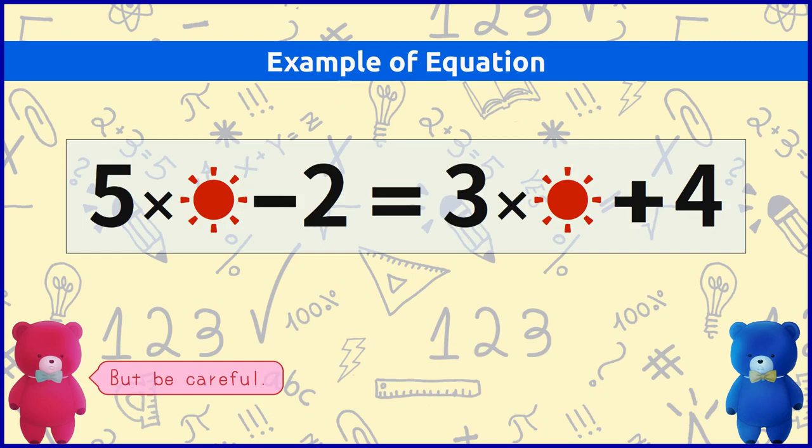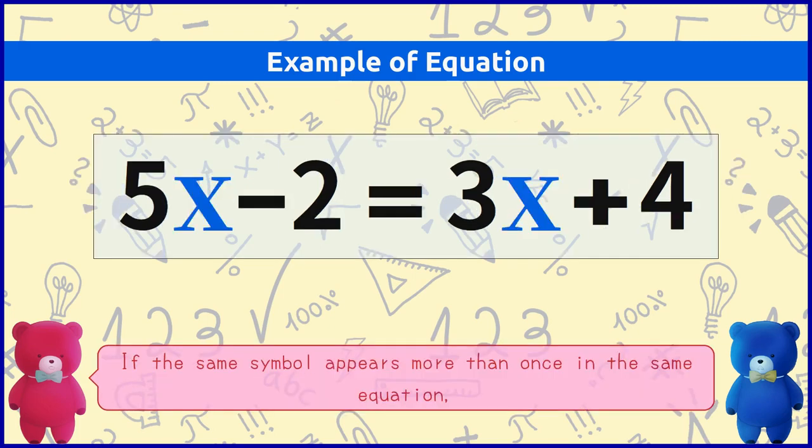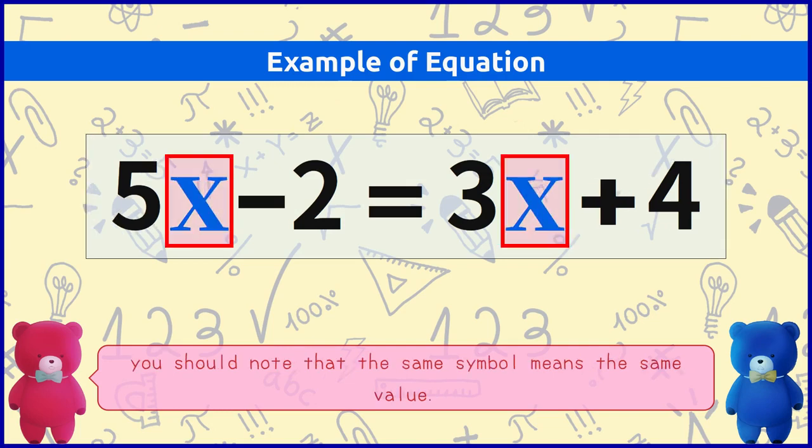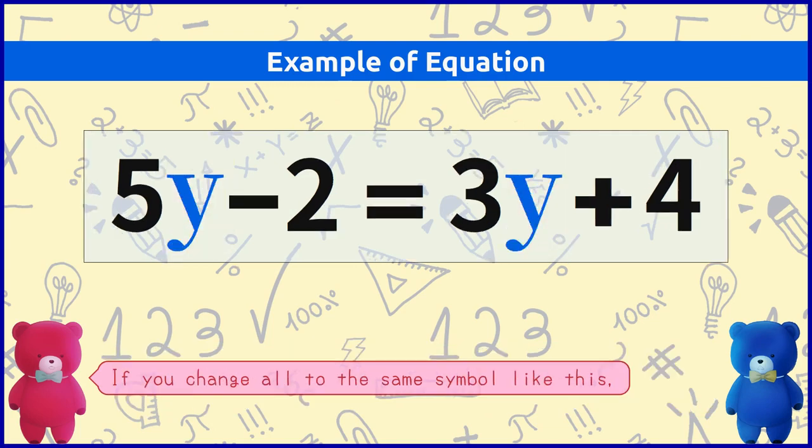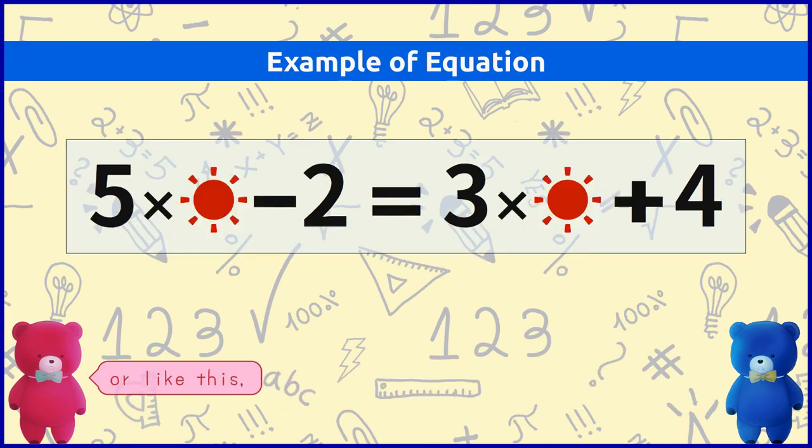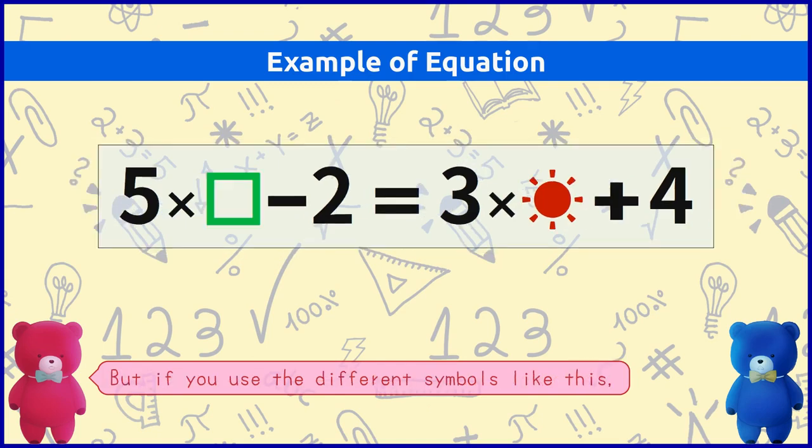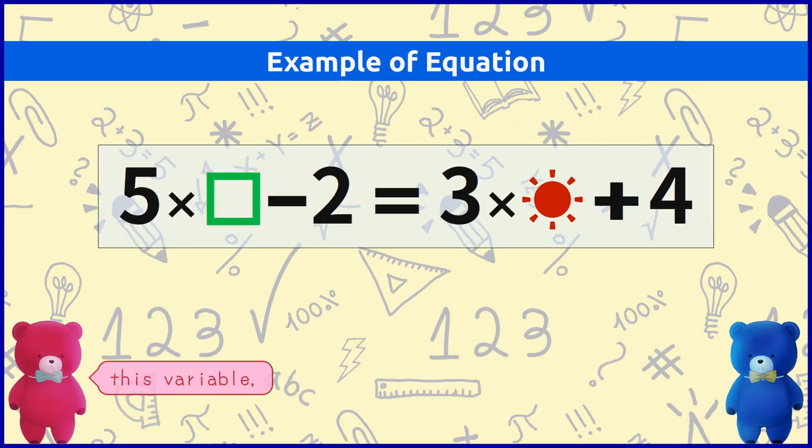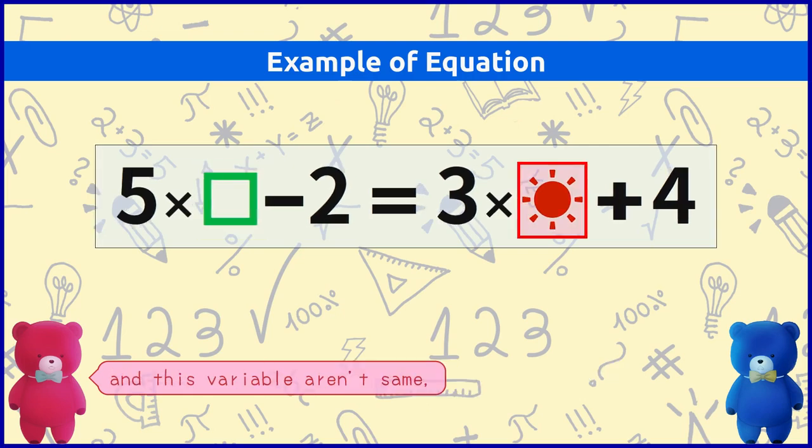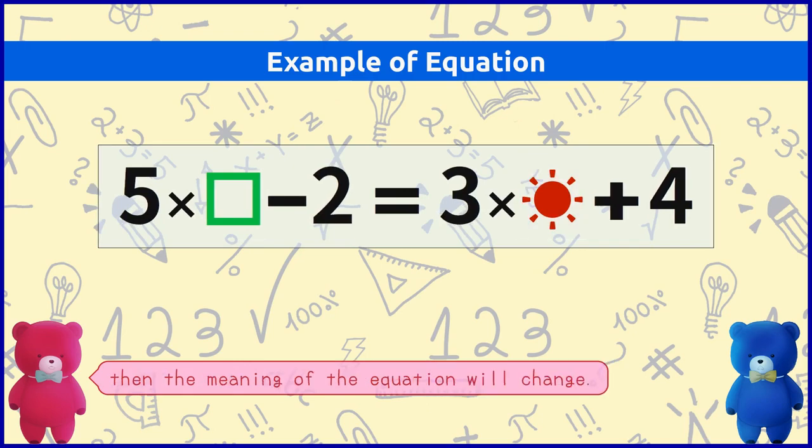But be careful. If the same symbol appears more than once in the same equation, you should know that the same symbol means the same value. If you change all to the same symbol like this or like this, the essence of the expression is unchanged. But if you use different symbols like this, this variable and this variable aren't same. Then the meaning of the equation will change.